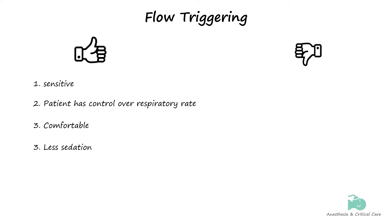There are however some problems with flow triggering. It may be too sensitive, giving rise to auto-triggering — a form of dyssynchrony where non-respiratory influences on circuit flow trigger mechanical breaths. For example, cardiac pulsation, fluid in the circuit, and secretions in the airway can also trigger the ventilator.